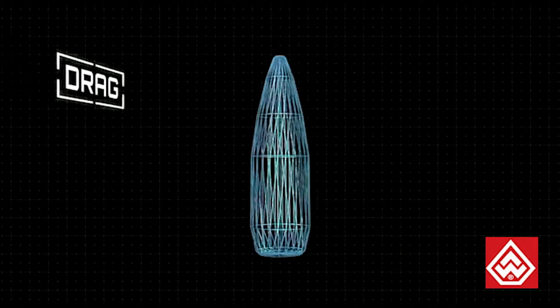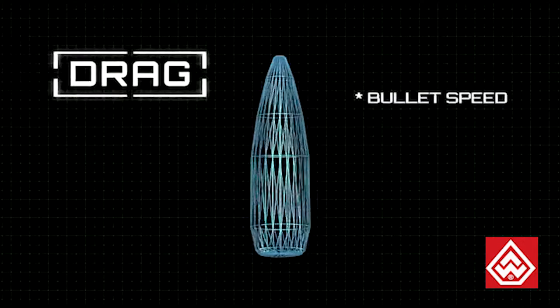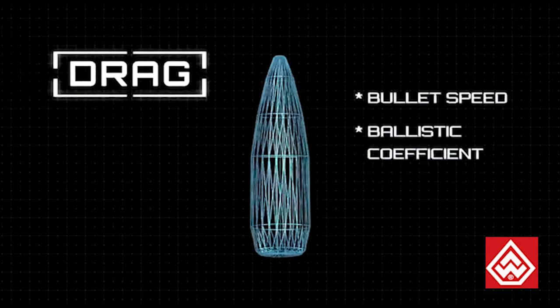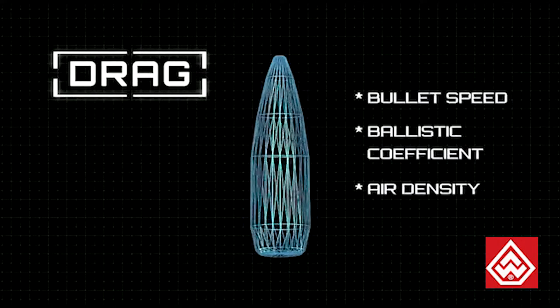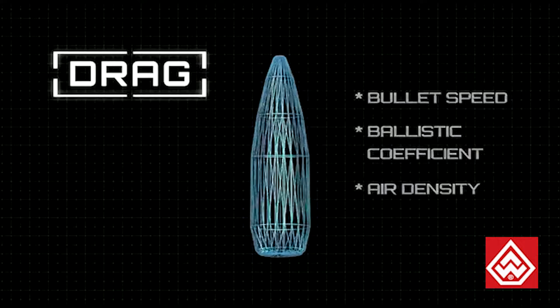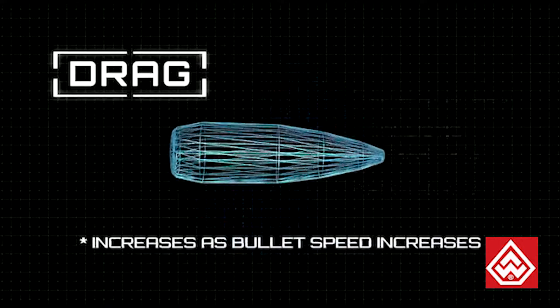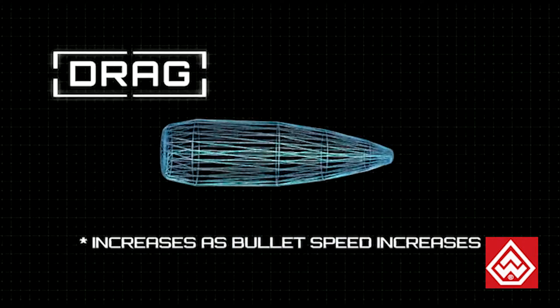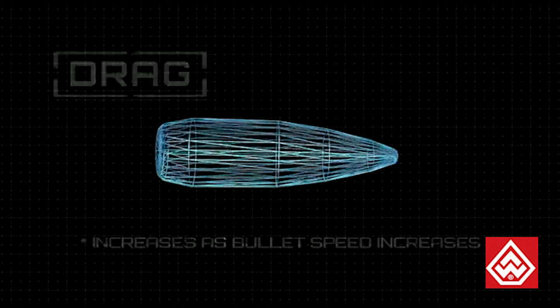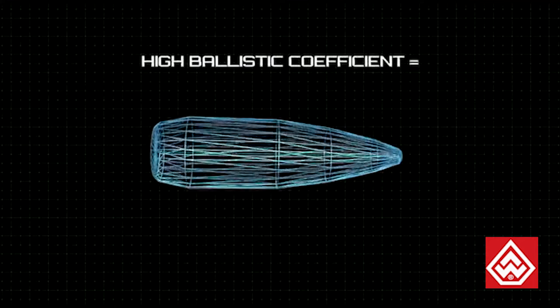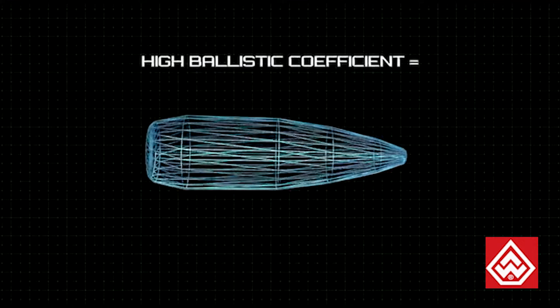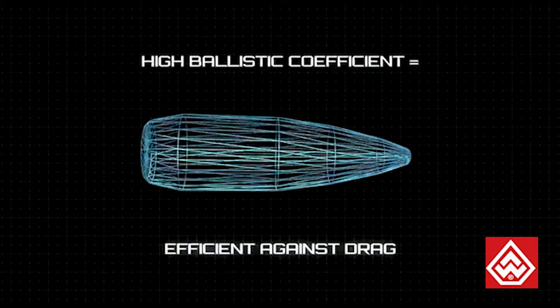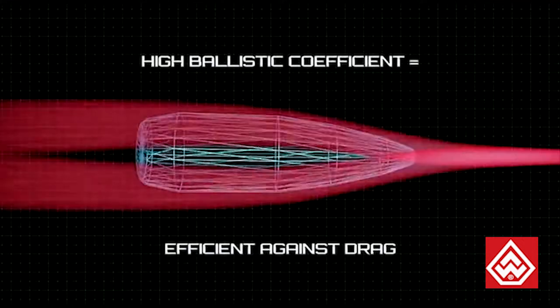Drag is determined by bullet speed, ballistic coefficient, and air density. It also increases when bullet speed relative to air increases. When a bullet's ballistic coefficient is high, it is more efficient against drag.